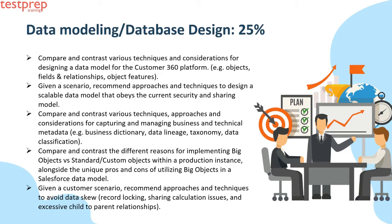Third, compare and contrast various techniques, approaches, and considerations for capturing and managing business and technical metadata — for example, business dictionary, data lineage, taxonomy, data classification. Fourth, compare and contrast the different reasons for implementing big objects versus standard or custom objects within a production instance, alongside the unique pros and cons of utilizing big objects. Fifth, given a customer scenario, recommend approaches and techniques to avoid data skew, record locking, sharing calculation issues, and excessive child-to-parent relationships.